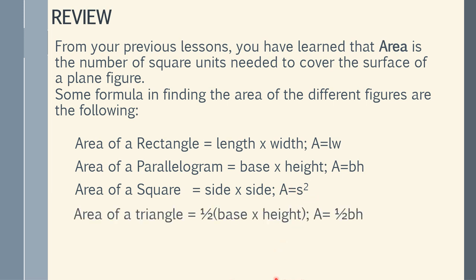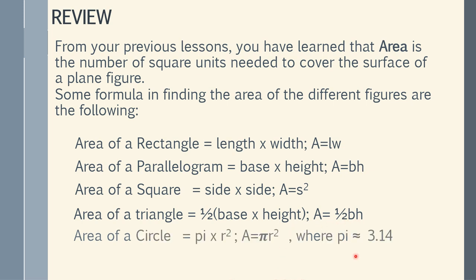We have the area of a triangle: one-half times the quantity base times height, or A equals one-half base times height. And then the area of a circle is pi r squared. In symbol, A equals pi r squared, where pi is equal to 3.14.